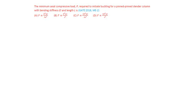The minimum axial compressive load P required to initiate buckling for a pinned-pinned slender column with bending stiffness EI and length L is: this is the column and both ends are pinned or hinged. Its length is L and bending stiffness is EI.